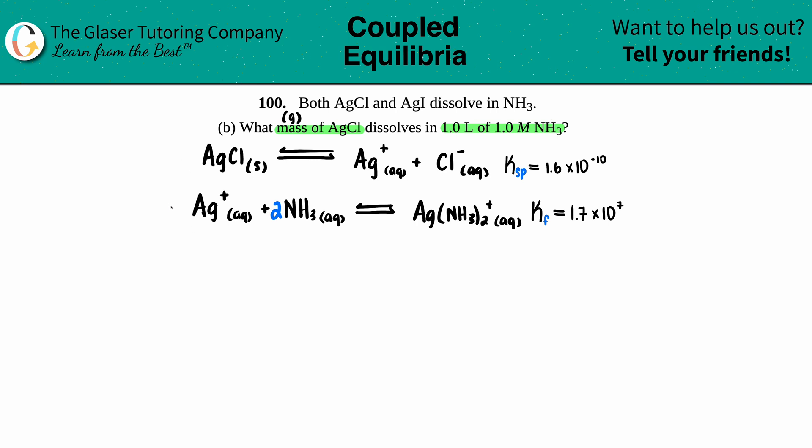So let's add these two equations together, pretty simple. Remember when you're adding equations, things that are similar on opposite sides cancel out. I have one Ag+ on the right here and one Ag+ on the left here, so goodbye, don't need that anymore.